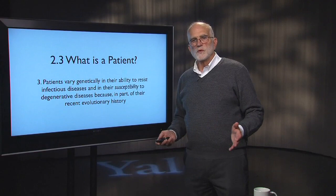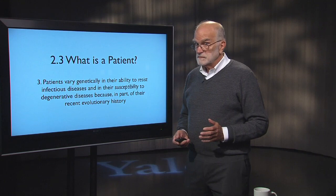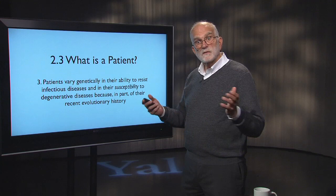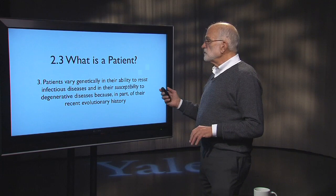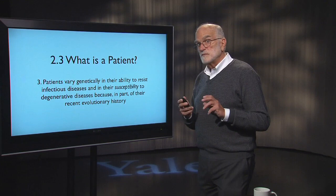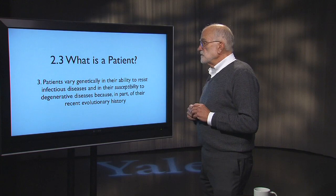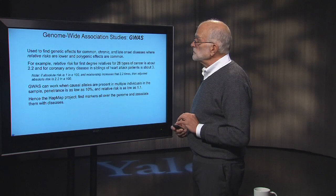Let's take a third look at what a patient is. As you recall from the last lecture, we evolved in Africa and then spread out across the planet. As we spread out, we diverged genetically in many different directions. That has consequences for our ability to resist infectious disease, for our susceptibility to degenerative disease, and in general for the fact that each patient becomes an individual with respect to these issues.